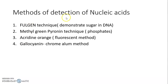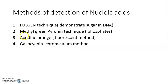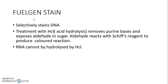Methods of nucleic acid detection. First is the Feulgen technique, which demonstrates sugar in the DNA. Then the methyl green pyronin technique. Then acridine orange, which is a fluorescent method. Then the gallocyanin chrome alum method. So four techniques: Feulgen technique, methyl green pyronin technique, acridine orange method or fluorescent method, and gallocyanin chrome alum method.